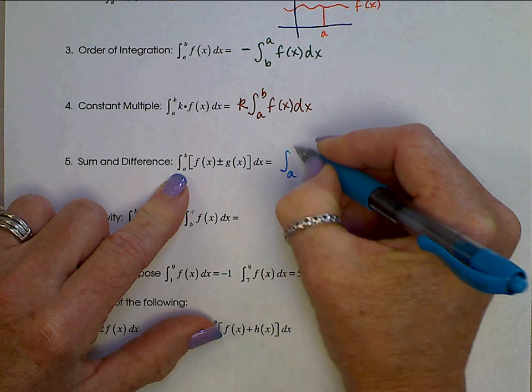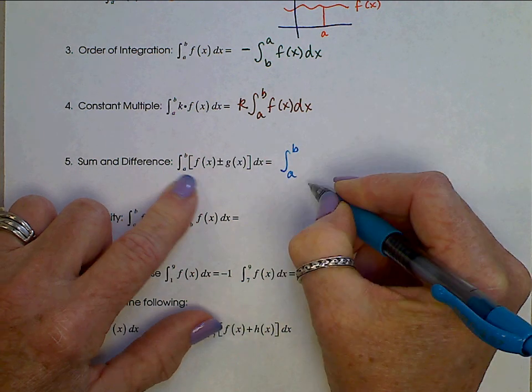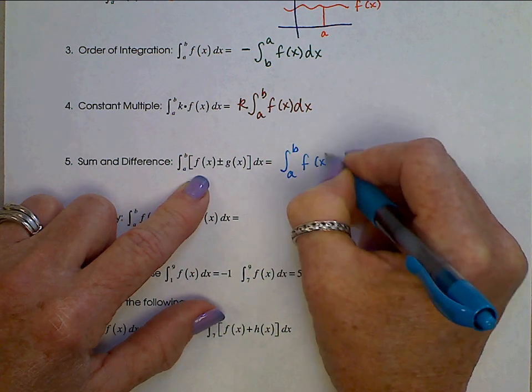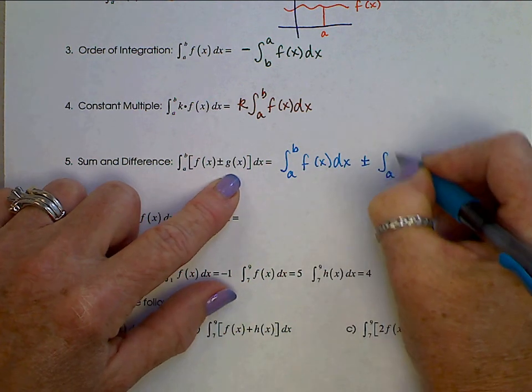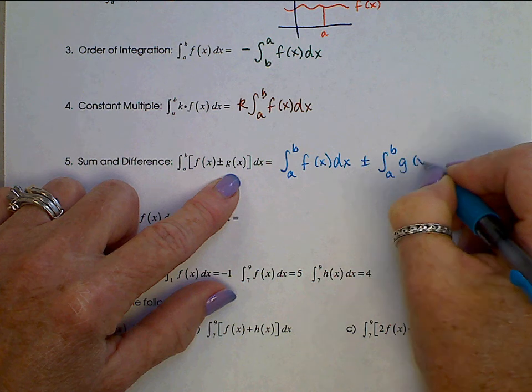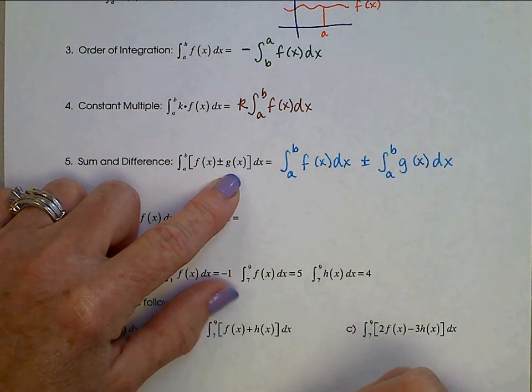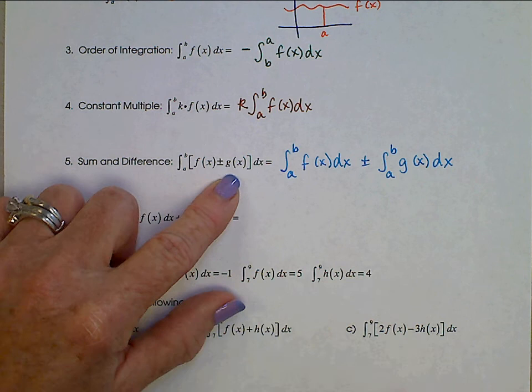we can break this apart and say the integral from A to B of f(x) dx plus or minus the integral from A to B of f(x) dx. So separating over that addition and subtraction sign.